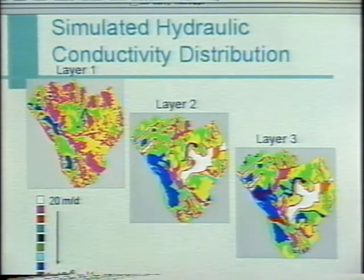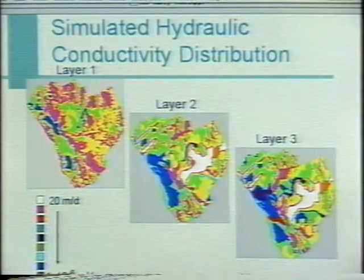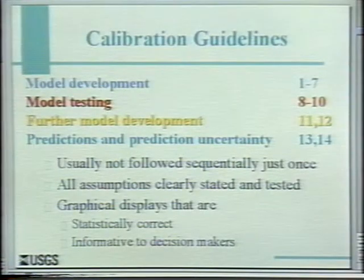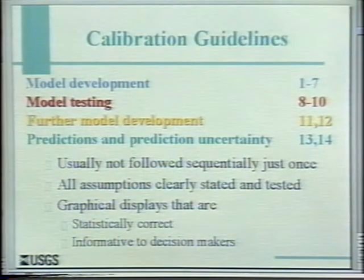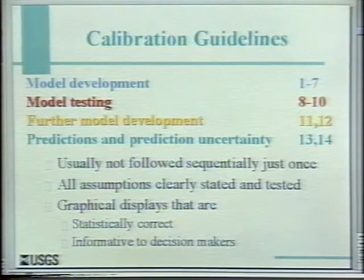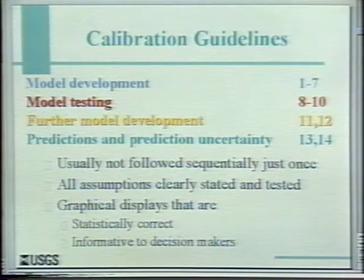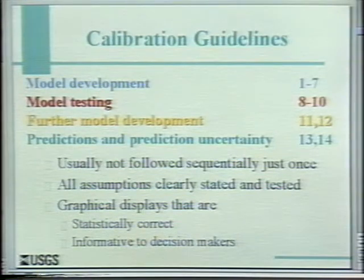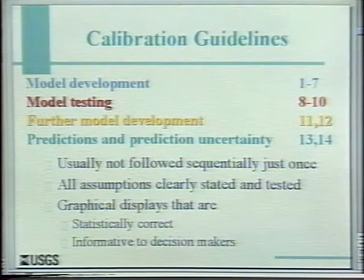We've since produced a 15-layer version of this model, but that just got done last month so I don't have results to show. These are the first calibration guidelines you've seen. There are 14 guidelines categorized into four pieces: seven model development guidelines, three model testing guidelines, two guidelines for further model development, and two for predictions and prediction uncertainty. The colors you'll see will follow those sets of guidelines throughout.